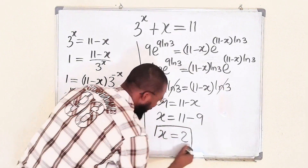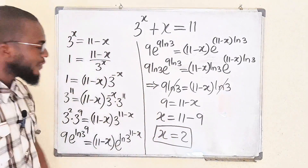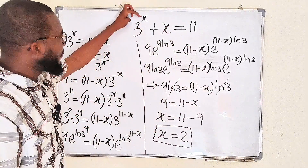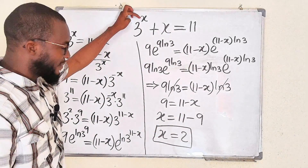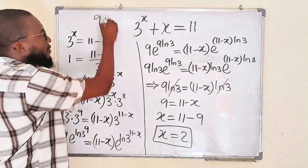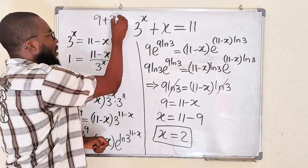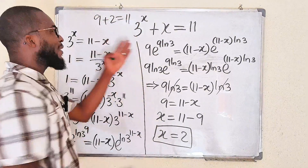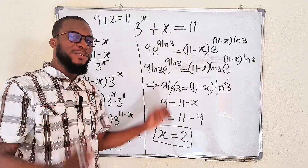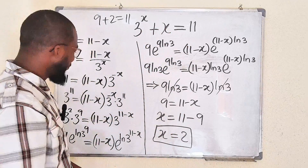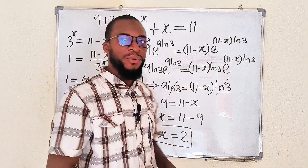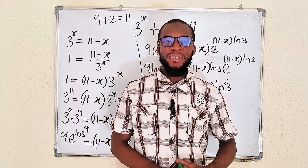As simple as that. If you like, you can confirm the value of x in the main equation. So if x is 2, 3 to the power of 2 is 9, plus x is 2, and this is 11. Which implies that x equal to 2 is the valid solution. Thank you for watching. Do share with your friends and colleagues, and don't forget to subscribe to my YouTube channel for more exciting videos.